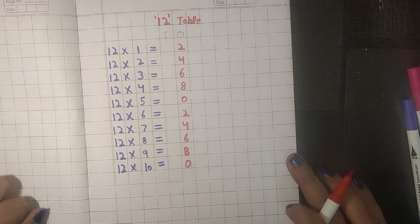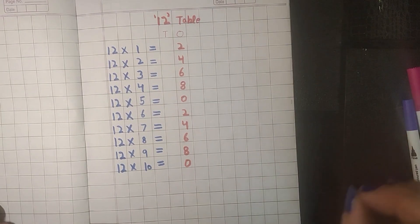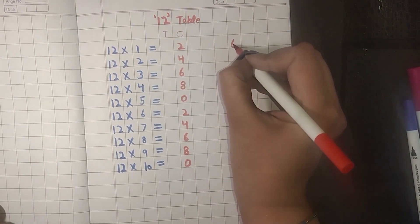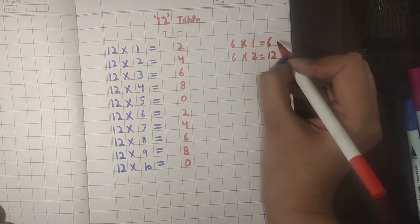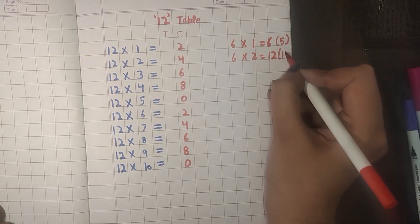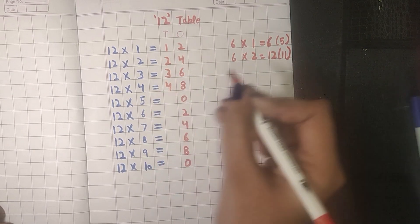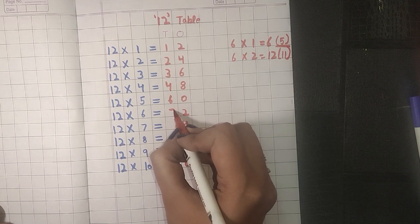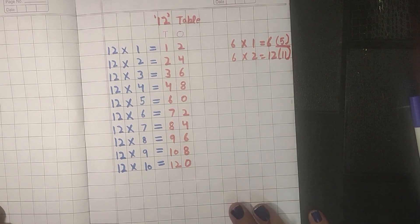For the tens place, we will write the numbers from 1 to 12, but we only have 10 spaces so we need to skip two numbers. We skip the number before each multiple of 6 — that is, before 6 and before 12. So we skip 5 and 11. We write: 1, 2, 3, 4, skip 5, 6, 7, 8, 9, 10, skip 11, and 12. And this is our 12 times table ready.